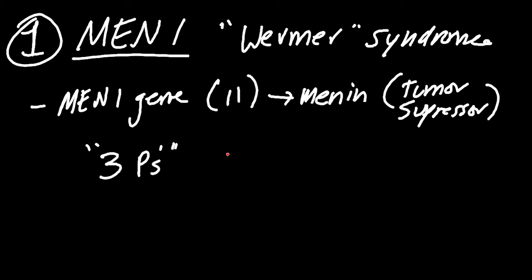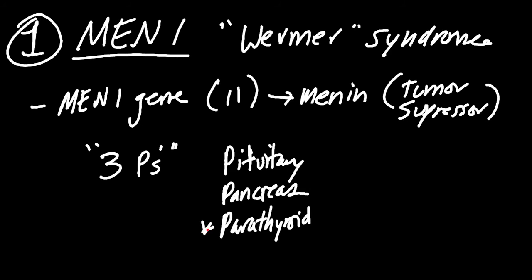For MEN1 syndrome, you need to think of the three Ps. You've got the pituitary, the pancreas, and the parathyroid. The parathyroid is the most important. However, you may also see pancreas disorders such as Zollinger-Ellison syndrome, VIPomas, anything that involves the endocrine portion of the pancreas. Pituitary is involved, or you can get the parathyroid as well.